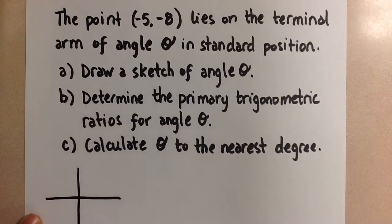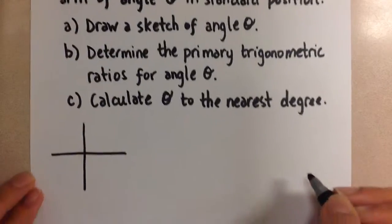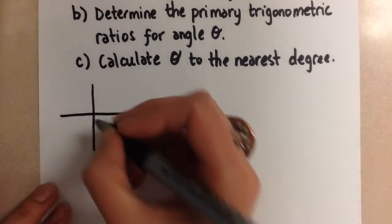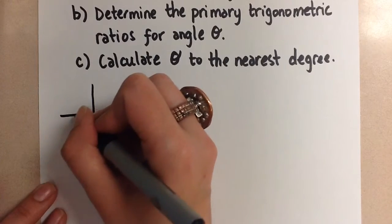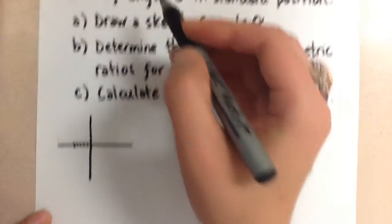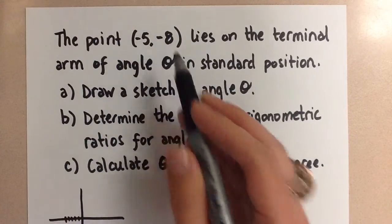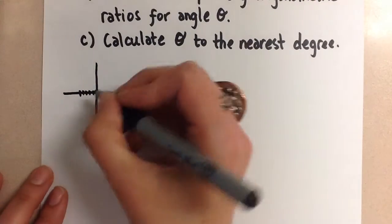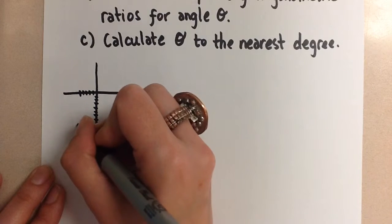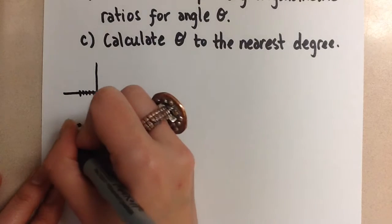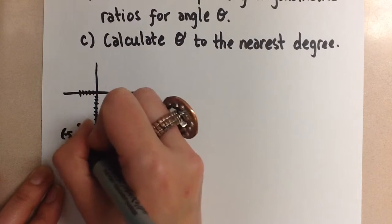Do our grid, and we're given the point 5, negative 8. So we're going to sketch that in. 1, 2, 3, 4, 5. Sorry, the point was negative 5, negative 8. Yes, negative 5 and 1, 2, 3, 4, 5, 6, 7, 8. So there lies negative 5 and negative 8.